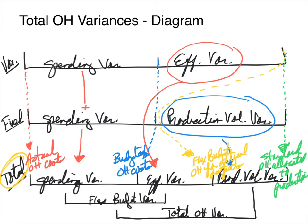I told you how to get the total variances one way — just bringing them down from the top two diagrams. The total spending variance is also the difference in peg one and peg two. The efficiency variance is the difference in pegs two and three. And the production volume variance is the difference in pegs three and four.